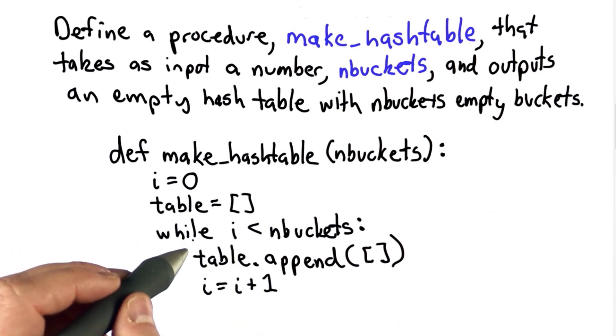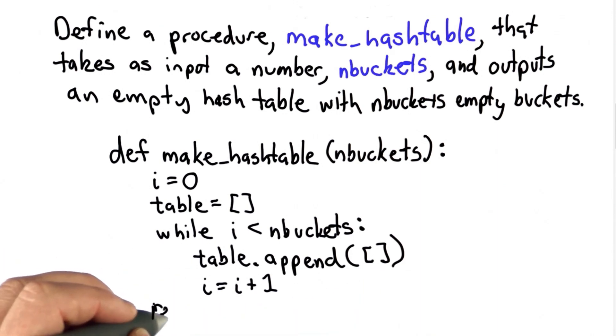So we're going to go through this loop n buckets number of times, each time adding an empty bucket to the table. And then we need to return the table at the end.